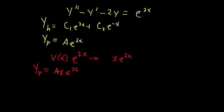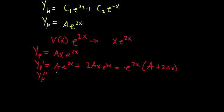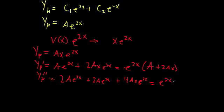Now let's plug it in and check that this actually works. The first derivative, using the product rule, is a·e^{2x} plus 2a·x·e^{2x}, which I'll rewrite as e^{2x} times (a + 2ax). And the second derivative, y'', is 2a·e^{2x} plus 2a·e^{2x} plus 4ax·e^{2x}, which simplifies to e^{2x} times (4a + 4ax).